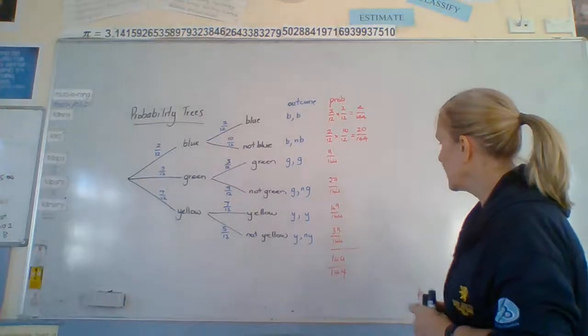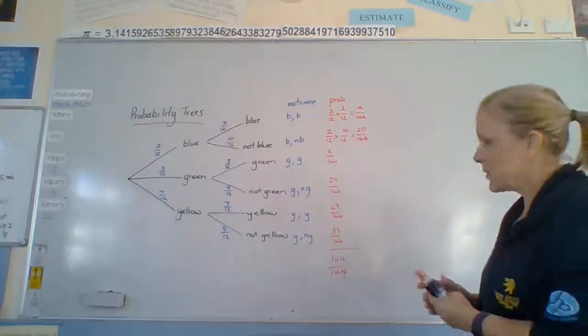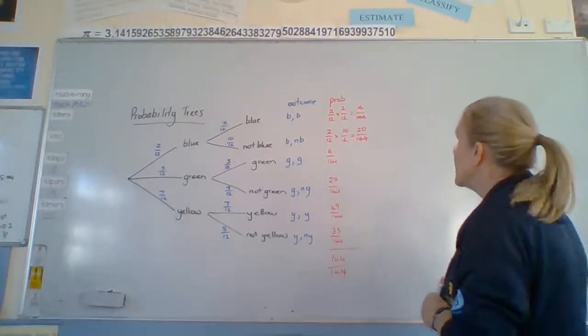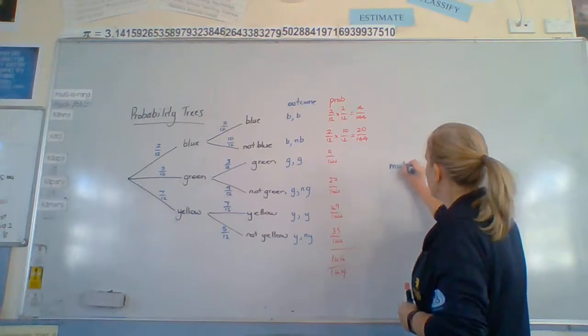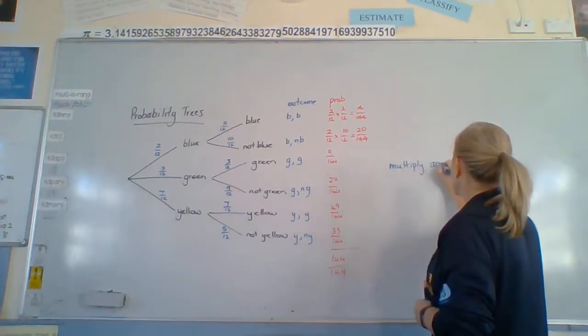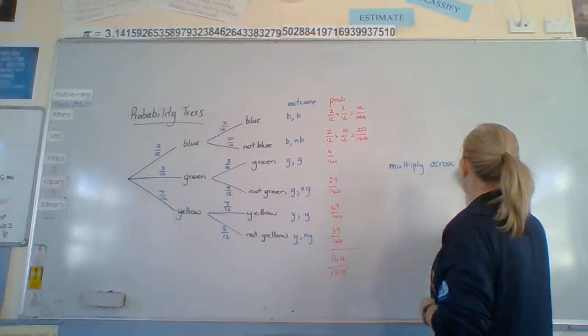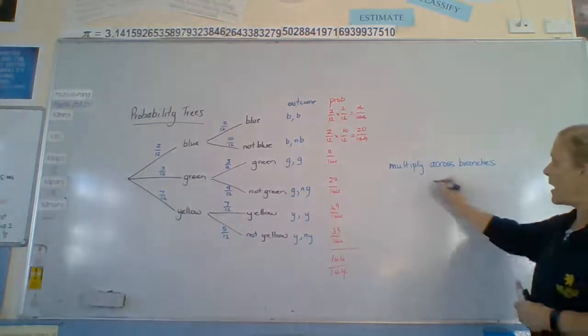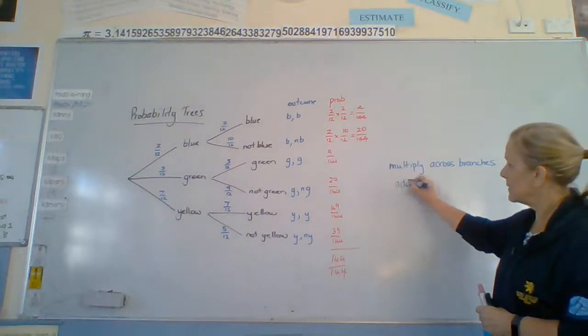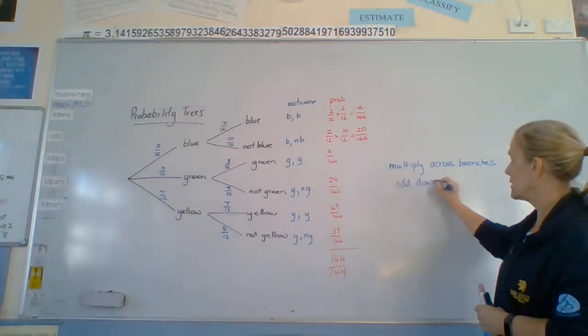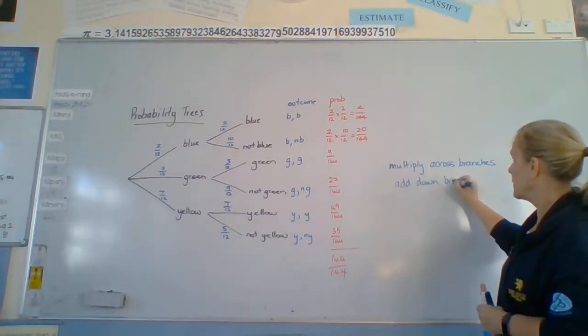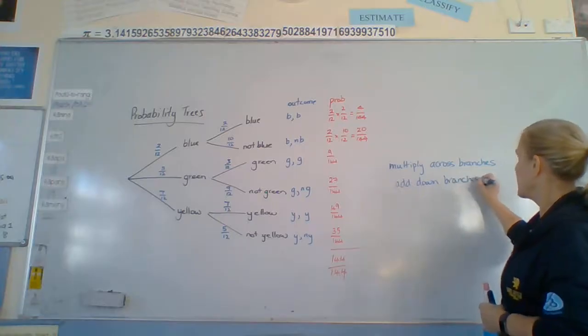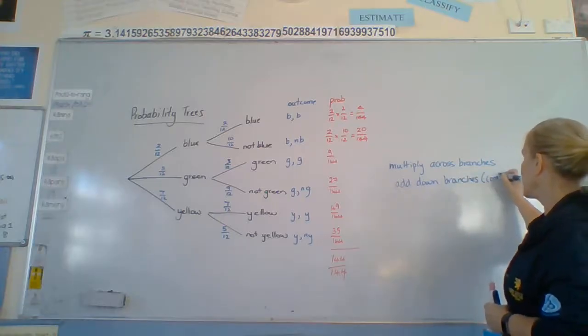So, it would always add down to 1. The big thing here is we multiply across branches and we add down branches.